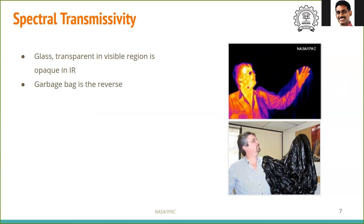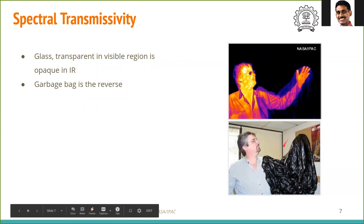But if you look at the infrared picture, glass has become opaque and this plastic bag has become transparent. This plastic bag is having transmittivity of one at infrared region and zero at visible region. The opposite is for glass.